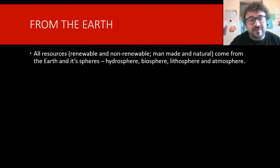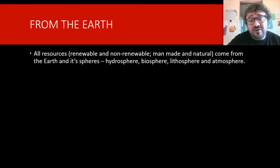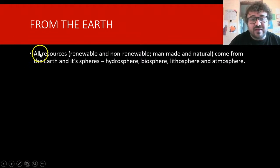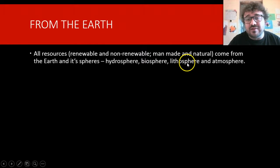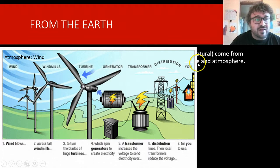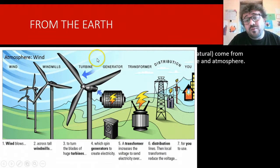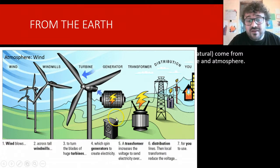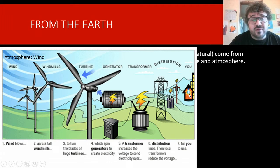Basically all our resources come from the Earth — with the exception of solar power, they all come from the Earth. We can look at four spheres: the hydrosphere, biosphere, lithosphere, and atmosphere. Starting with the atmosphere — one resource we have is wind. Wind blows across the giant fans, the blades in a windmill; they turn generators, which generates electricity that can be used in homes. It's a wonderful thing.